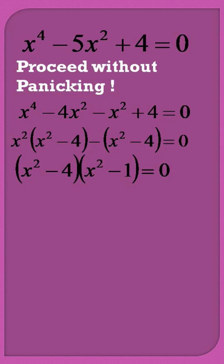Which gives us two solutions in x square, that is x square minus 4 is equal to 0 and x square minus 1 is equal to 0.